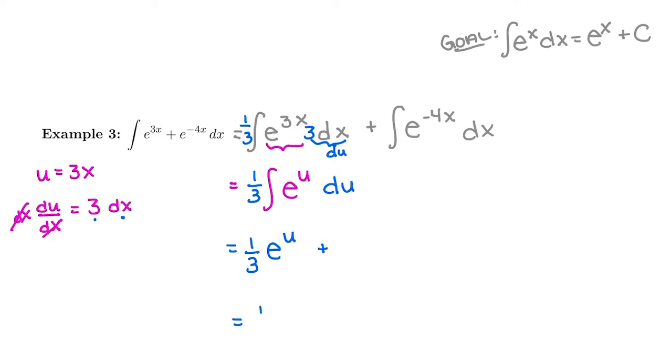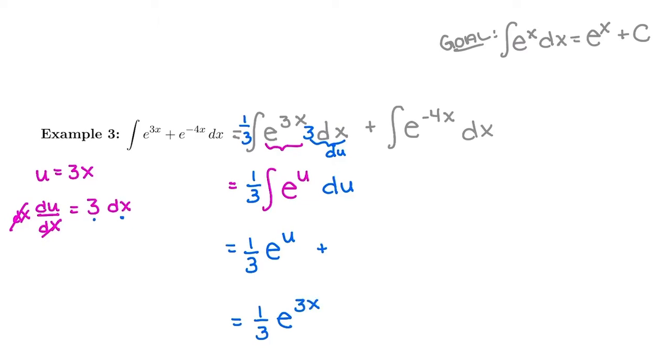And I'll do the constant at the end. Last piece is subbing back in for x's. This is one-third e to the u is really 3x. All right, so we did that first u-sub.